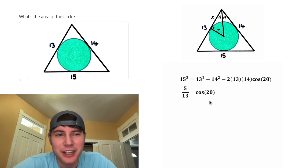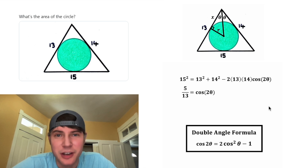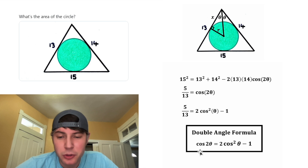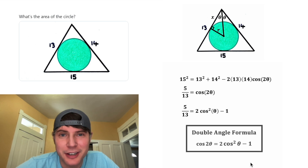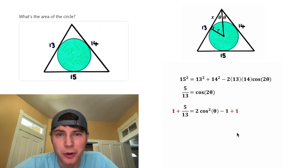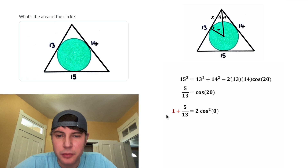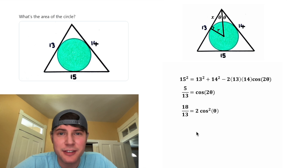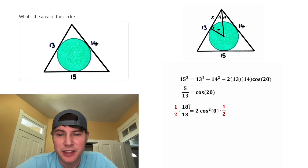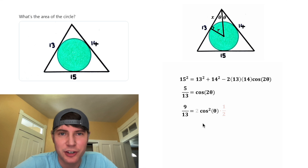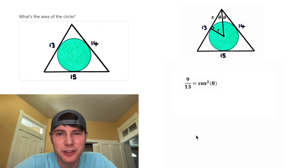It's tricky to work with this double angle, so we use the double angle formula: cosine of two theta equals two cosine squared theta minus one. Adding one to both sides, the negative one and positive one cancel on the right, and on the left we rewrite 1 as 13/13, giving us 18/13. Multiplying both sides by one half changes 18 into 9, and the two cancels on the right. So cosine squared theta equals 9/13.